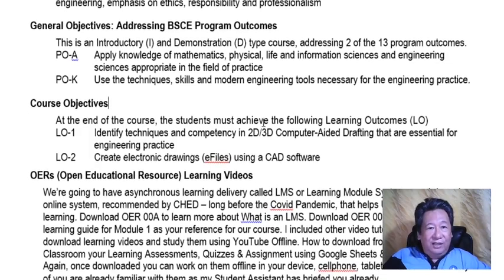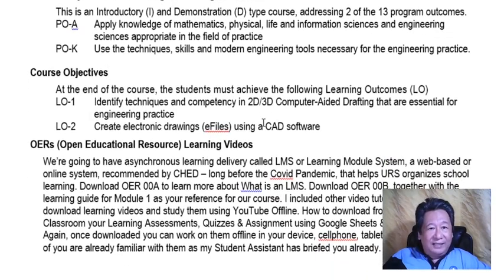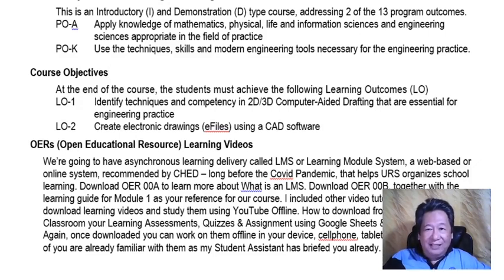Here are the course objectives. At the end of the course, you must achieve the following Learning Outcomes. Learning Outcome 1: you must be able to identify techniques and competency in 2D and 3D Computer Aided Drafting essential for engineering practice. Learning Outcome 2: you are able to create electronic drawings or e-files using CAD software.